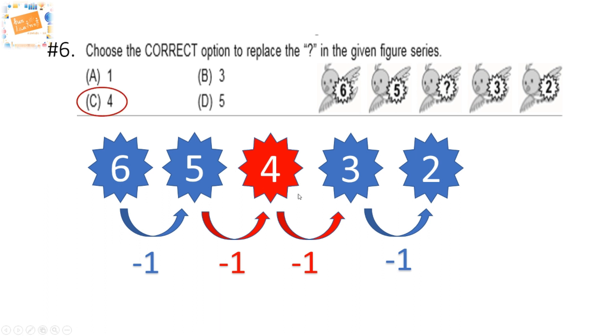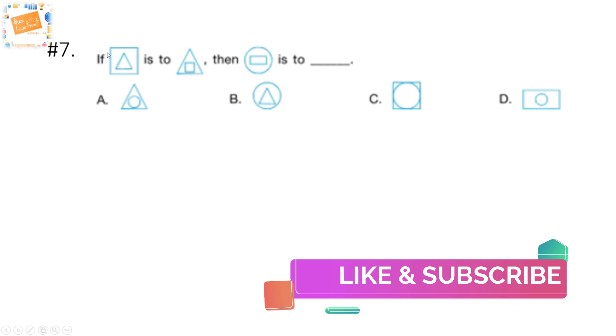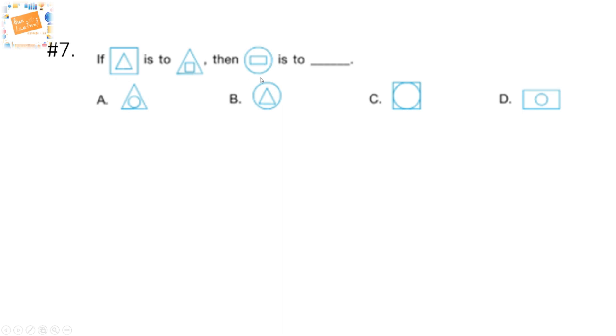Question number seven: if this figure is to this figure, then this figure is to what? This figure is to this figure. The triangle inside a square comes outside, and the figure that is outside goes inside.